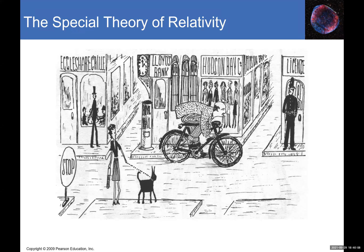We are now looking at special relativity. Up to this point we have been studying classical physics — that includes Newtonian mechanics, laws of motion, waves, thermodynamics, electricity, and magnetism. These are all considered classical physics, and everything was more or less developed by the end of the 19th century, going back to Galileo's time in the 17th, 18th, and 19th centuries.